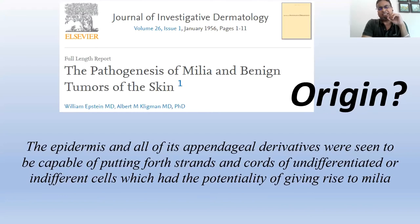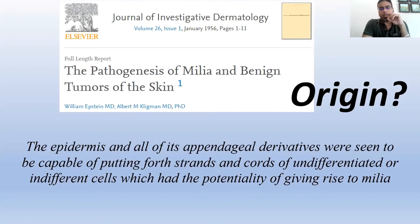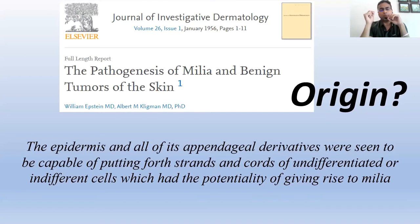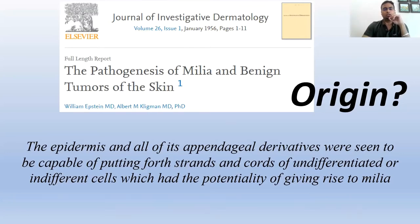The pathogenesis of milia and benign skin tumors was elucidated by Epstein and Kligman back in 1956, but none of this data has actually gone into standard textbooks. They said that the epidermis and all of its appendageal derivatives were seen to be capable of putting forth strands and cords of undifferentiated cells which had the potentiality of giving rise to milia. So it's not just the hair follicle, not just the epidermis, not just the eccrine — anything can give rise to milia.